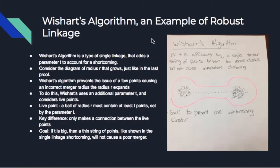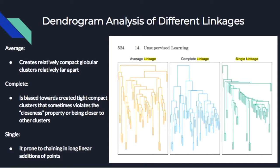Here we're going to look at Wishart's algorithm, which is an example of robust linkage. Similar to Ward's method, it's a slightly more complicated variation of single linkage. It adds a parameter t along with the increasing radius sigma that we looked at in the proof of single linkage, and the whole point is it considers live points and not-live points. The goal is to prevent ending up with one big ambiguous cluster. For instance, if the distance between linear points was the same and the connection to each cluster was the same, once sigma hit a certain level the whole cluster would become one, giving you no information. Wishart's algorithm tries to overcome the shortcoming of single linkage by using the parameter t in order to give more meaningful results.